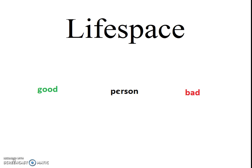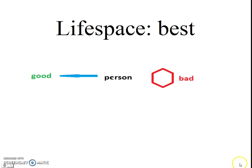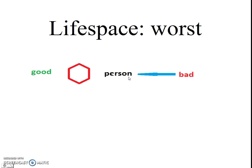This is what the life space looks like to an individual person. There are good things that the individual would like to achieve, and bad things the individual would like to avoid. This is the best-case scenario, where the individual has a vector — a means of achieving that which is good — and also an obstacle, something to protect him from something bad. This is the worst-case scenario: the individual has an obstacle preventing him from achieving that which is good, and yet there's nothing to protect him from that which is bad.